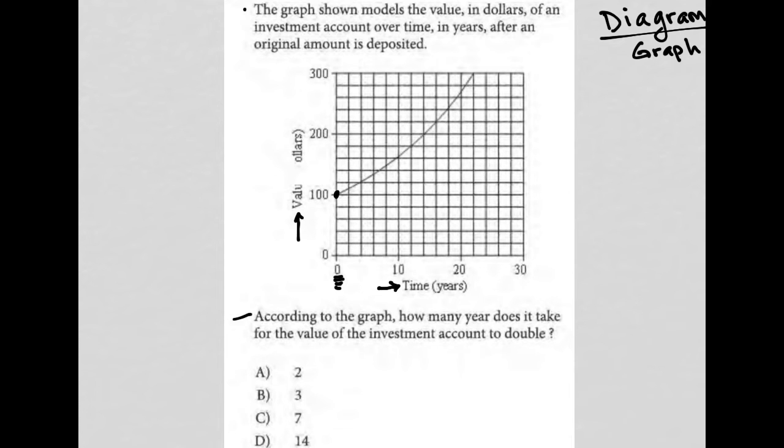The question says, according to the graph, how many years does it take for the value of the investment account to double? So if we're starting off at $100, we want to get to $200, which takes us right here on the graph.